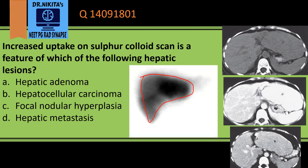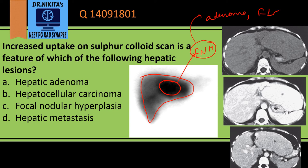On the sulfur colloid scan, we see increased uptake in the lesion, which tells you this is FNH. This is a very important point to differentiate it from adenoma or even fibrolamellar carcinoma, which also has a central scar. Remember: colloid scintigraphy showing increased uptake means FNH.